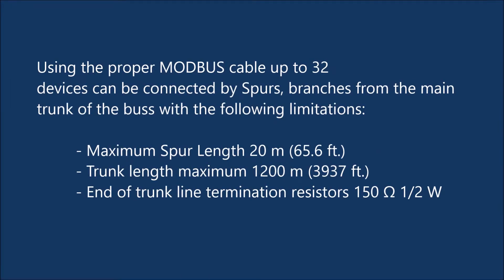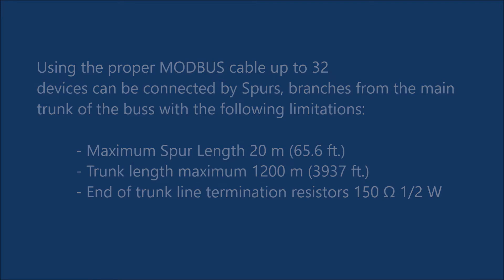Using the proper Modbus cable, up to 32 devices can be connected by spurs — branches from the main trunk of the bus — with the following limitations: maximum spur length 20 meters (65.6 feet), trunk length maximum 1,200 meters (3,937 feet), and end-of-trunk line termination resistors of 150 ohms at 1.5 Watts.